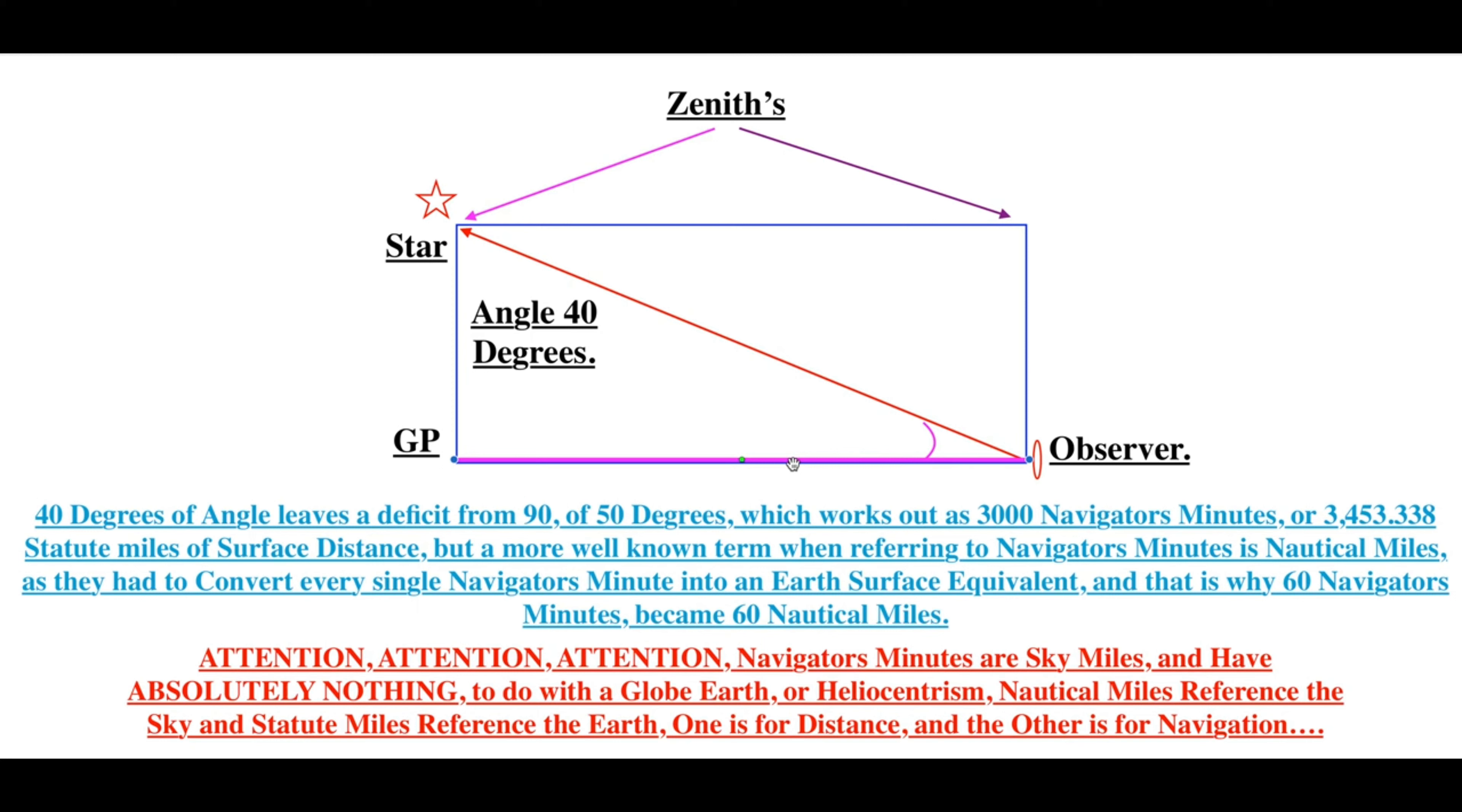That's why there is 60 nautical miles per degree, because there are 60 minutes per degree, 60 navigator's minutes per degree. That is why we have 60 nautical miles per degree, but we have 69 statute miles.